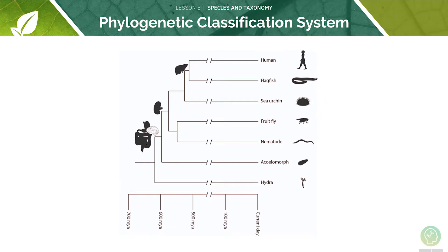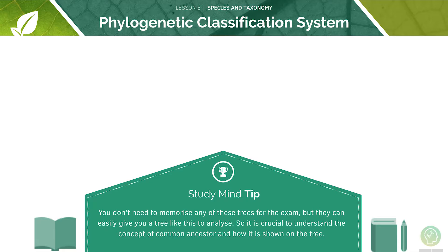Here we can see an example of the classification system. Each split in the branch signifies a common ancestor. For example, humans and hagfish had a common ancestor from just over 500 million years ago, whilst humans and fruit flies had a common ancestor from roughly 570 million years ago. You don't need to memorise any of these trees for the exam, but they can easily give you a tree like this to analyse.